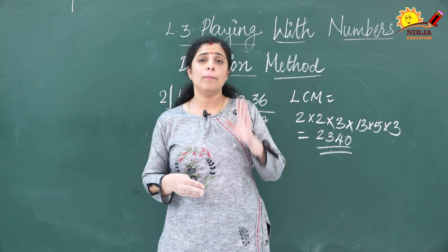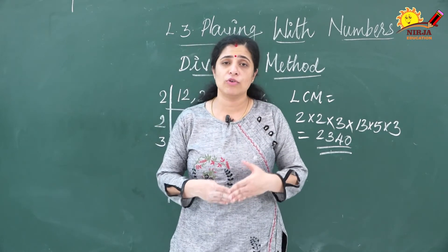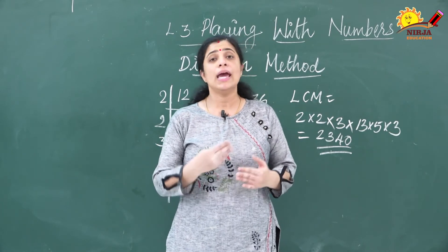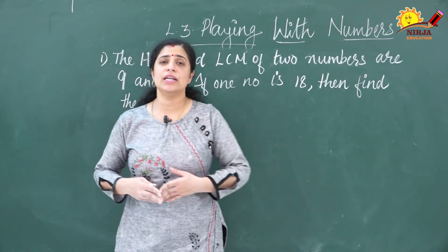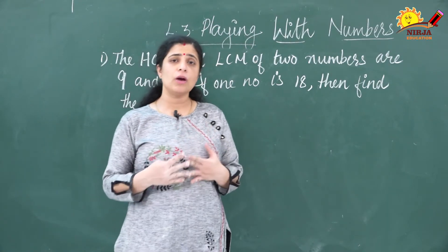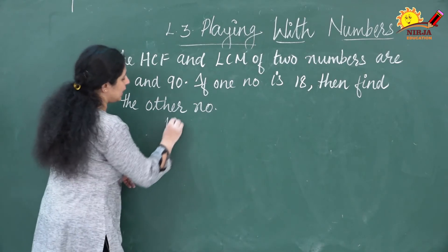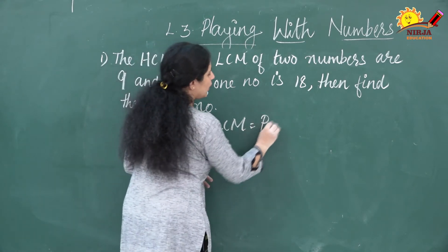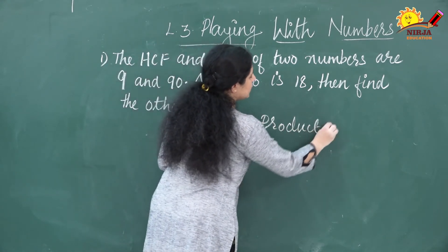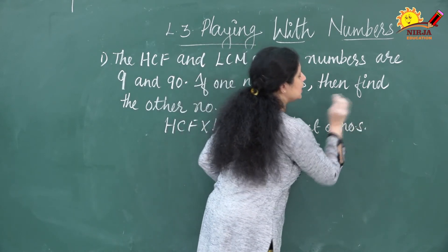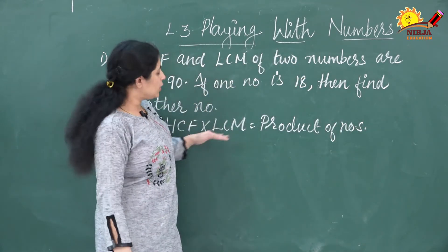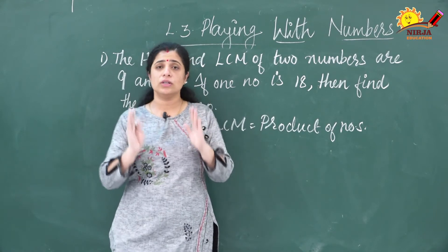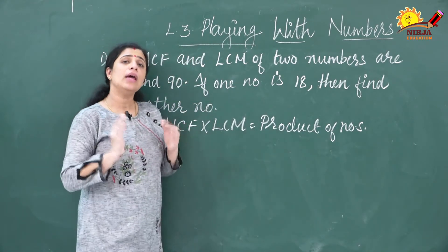We have discussed all three methods to find the LCM. Now we are going to discuss the last topic: the relation between HCF and LCM. When you multiply the HCF and LCM of two numbers, you get the product of those numbers. This is the rule relating HCF and LCM.